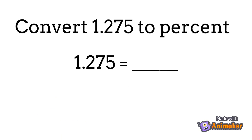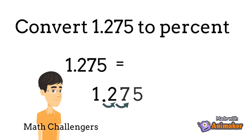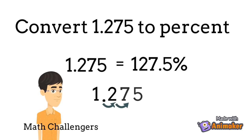For 1.275, we can do the same process — just move the decimal point 2 places to the right, then put the percent sign. 1 and 275 thousandths in percent is 127.5%.